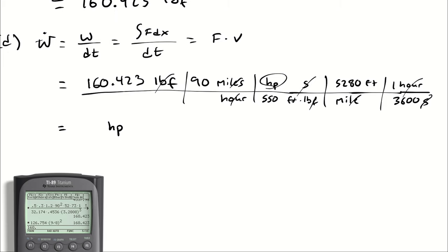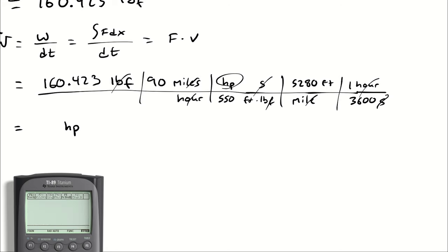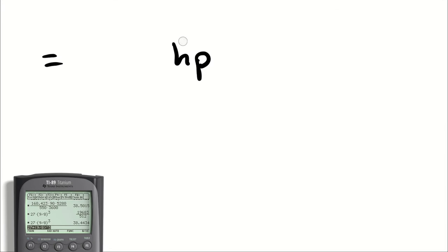So 160.423 multiplied by 90 gives us 38.5. And again, we could just do 27 multiplied by 9 over 8 cubed. Either way, we should get the same thing. About 38 and a half, 38 and a half horsepower.